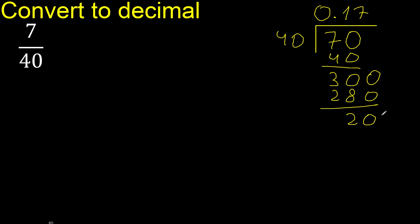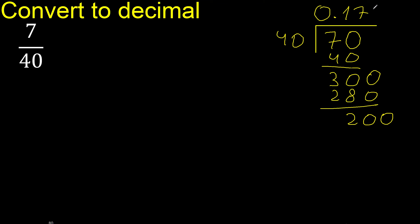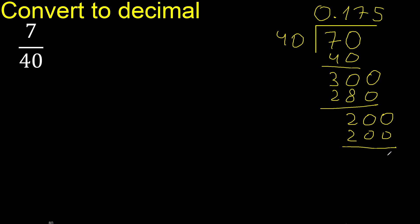We complete with 0 again; the decimal point is already placed. We now have 200. 40 multiplied by 5 is exactly 200. We subtract: 200 minus 200 is 0. Therefore we are finished. The answer is 0.175.